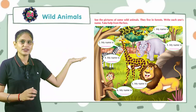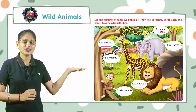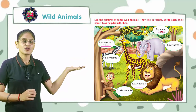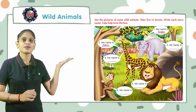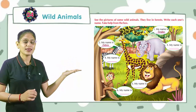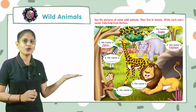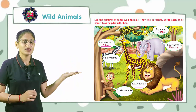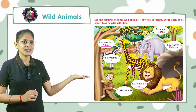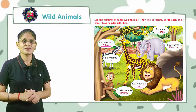Look at the first — my name is snake. Second, my name is zebra. Third, my name is elephant. Fourth, my name is giraffe. Fifth, my name is lion. Sixth, my name is monkey.